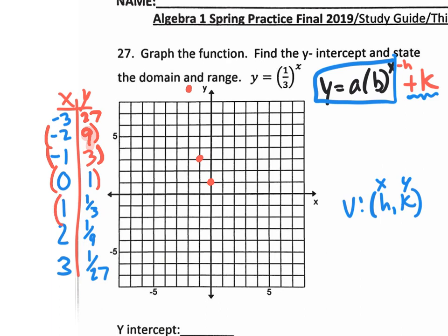Now, if we go this way: 1 on the x, one-third on the y — check this out. 1 on the x, one-third of the way up, it's not even halfway up. So I need to put a dot that's not even halfway up — it's about right here. And then the next one, (2, 1/9) — 1/9 is hardly anything. And then the next one, (3, 1/27) — you can't even tell the difference there.